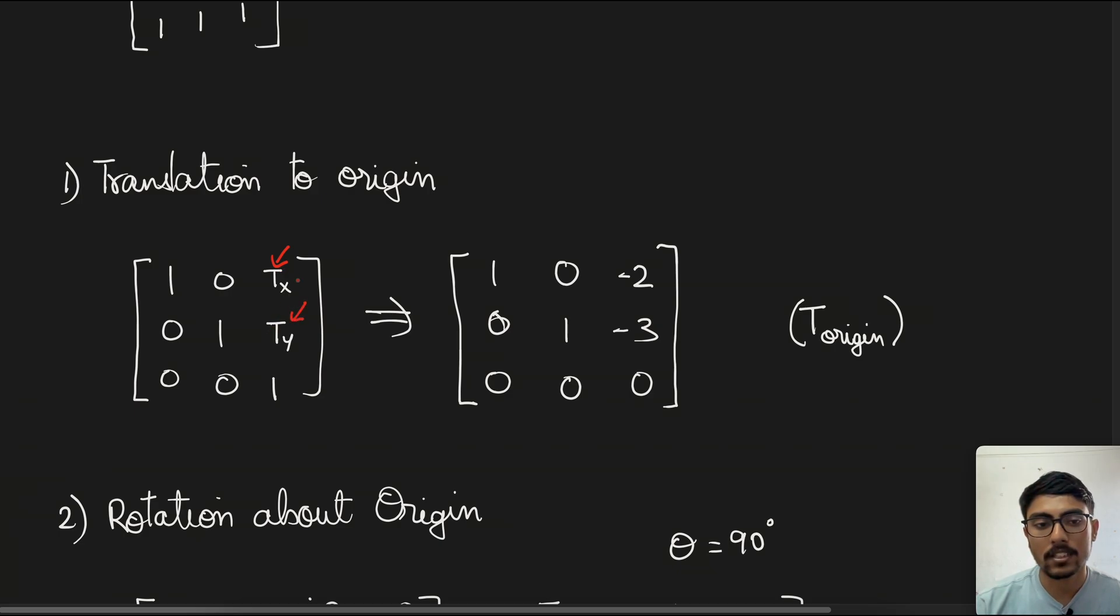Similarly, along the y-axis it is denoted by ty. To make the point go to the origin, we need negative 2 and negative 3 on the y-axis. So that is what is written here. Let us denote this matrix by T_origin.